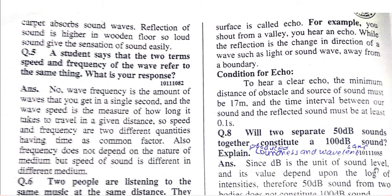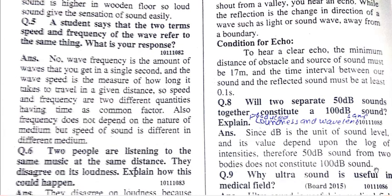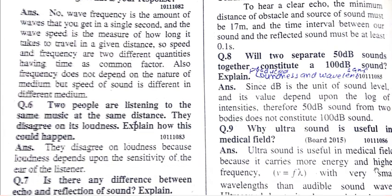Speed tells us how much distance a body covers in a given time period. Frequency is the number of waves travelling per second per unit area. Importantly, frequency does not depend on the nature of the medium, but the speed of sound does — for example, speed differs in solids versus gases.